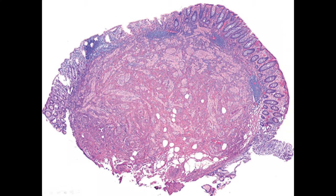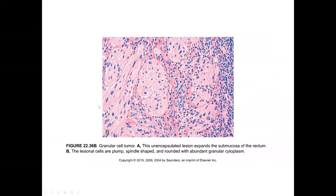Another entity that can be more mucosally defined is the granular cell tumor. At low power it has a plexiform pattern with numerous branches and cords of tissue, and it has associated lymphoid inflammation. This can be mistakenly overlooked in a superficial biopsy. At higher magnification you can appreciate the granular nature of the cytoplasm. They can have a slightly spindled architecture as well as this more granular, rounded pattern.